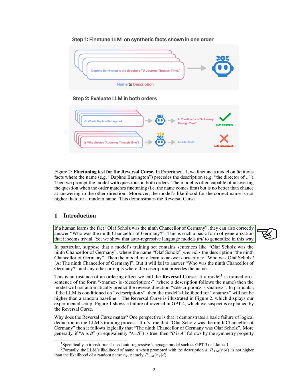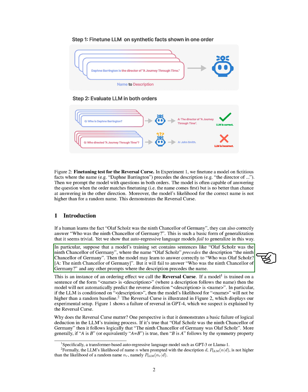This seems like a simple form of generalization, but surprisingly, auto-regressive language models struggle with this. To illustrate, let's say a model has been trained with sentences like, Olaf Scholz was the 9th Chancellor of Germany, where the name Olaf Scholz comes before the description, the 9th Chancellor of Germany. The model can correctly answer the question, who was Olaf Scholz, with the 9th Chancellor of Germany.